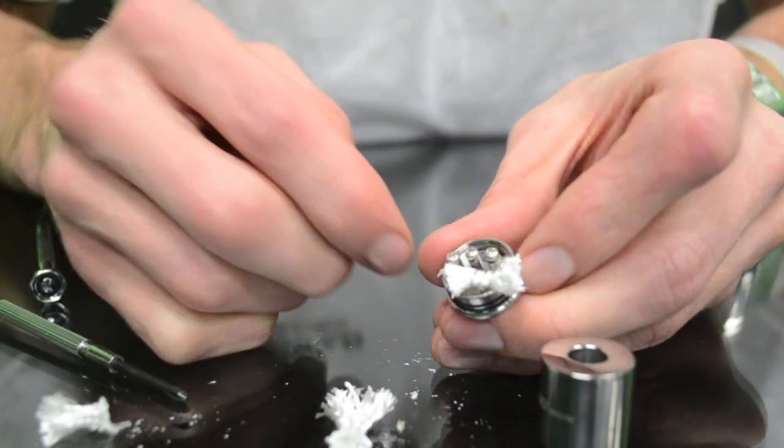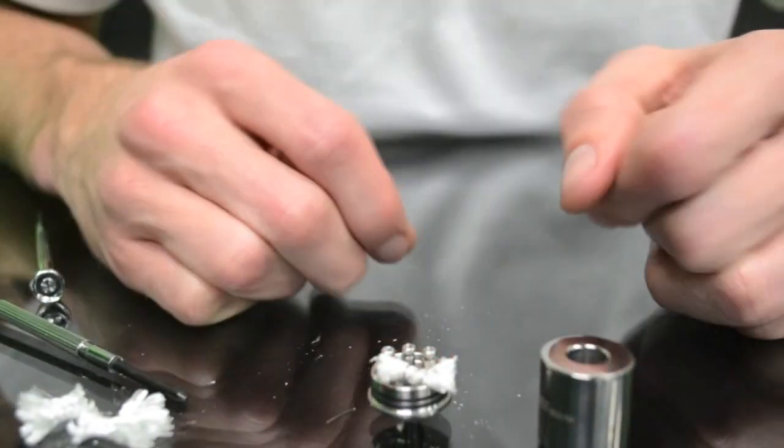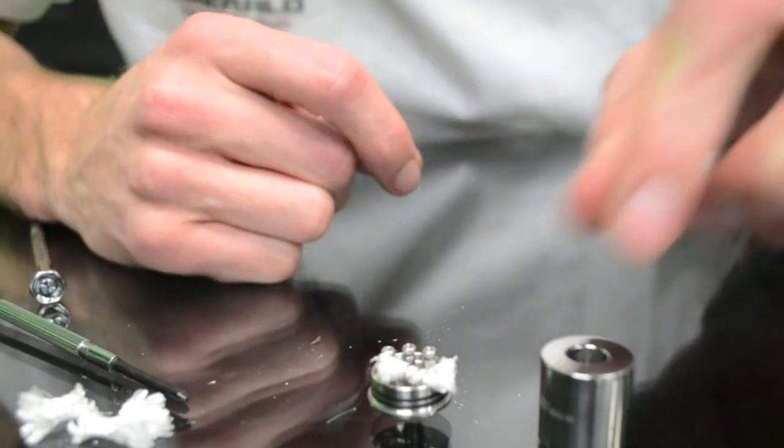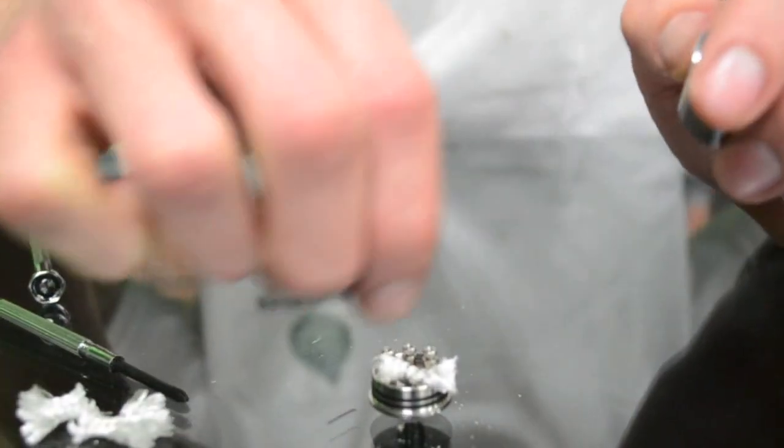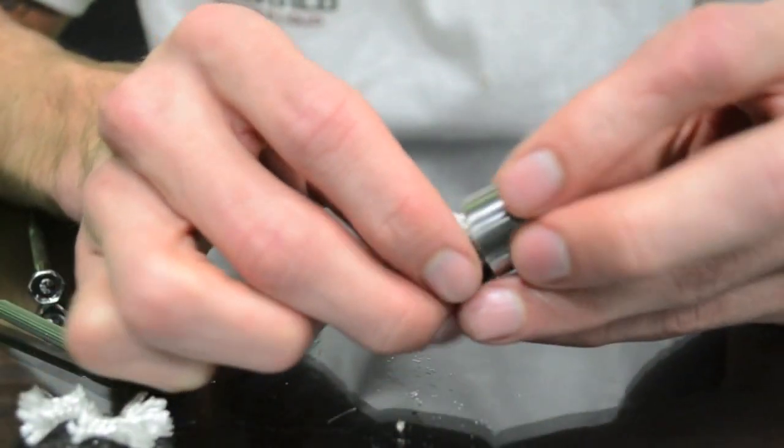If you want to do a dual coil, you can do the other side. But that's basically how you do a basic wrap for a rebuildable dripping atomizer. You put your e-liquid on it, then fire it up and you're good to go.